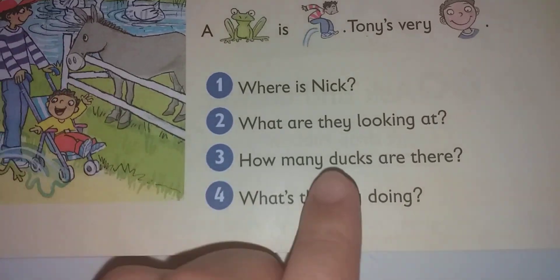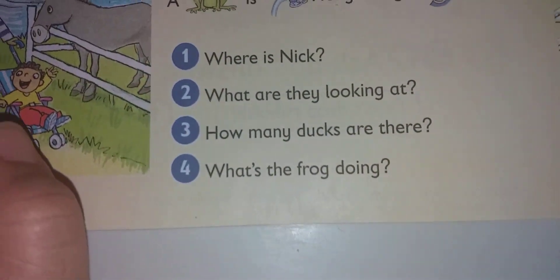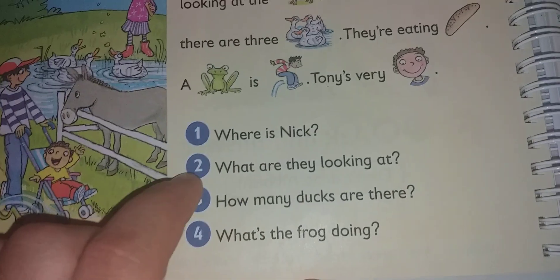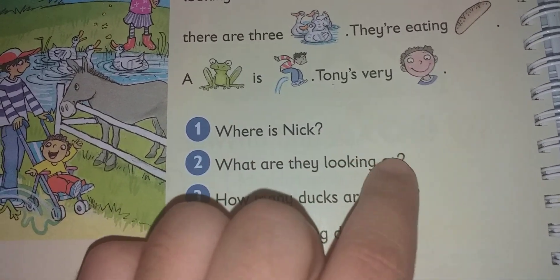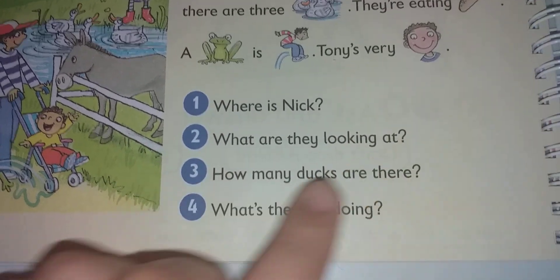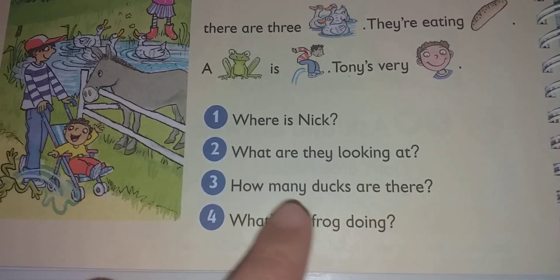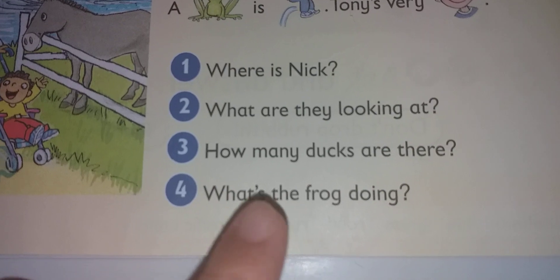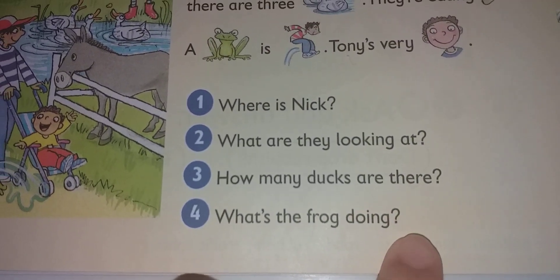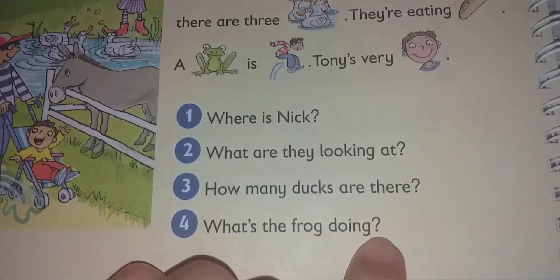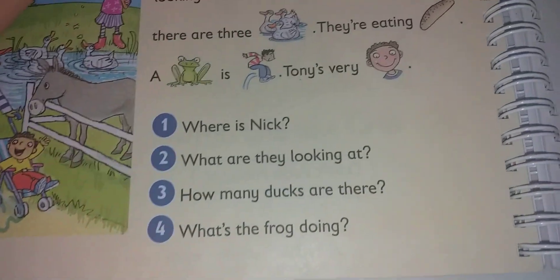After that, we move to the questions. We have four questions. Question number one: Where is Nick? Question number two: What are they looking at? Question number three: How many ducks are there? Question number four: What's the frog doing?